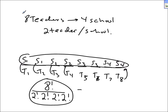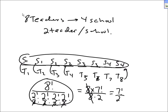For the record: 8 factorial divided by 2 factorial four times equals 8 factorial divided by 16. The eights cancel and you get 7 factorial divided by 2. That's a valid simplified answer.